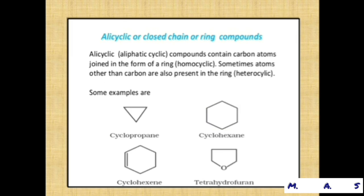After acyclic compounds, now we are going to study alicyclic or closed chain or ring compounds. Alicyclic means aliphatic cyclic. Compounds containing carbon atoms joined in the form of a ring are called homocyclic. Sometimes atoms other than carbon — such as nitrogen, oxygen, or sulfur — are also present in the ring; these are called heterocyclic. For example, tetrahydrofuran contains oxygen as a heteroatom.